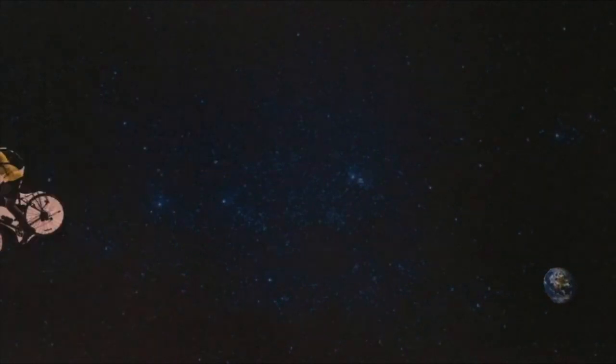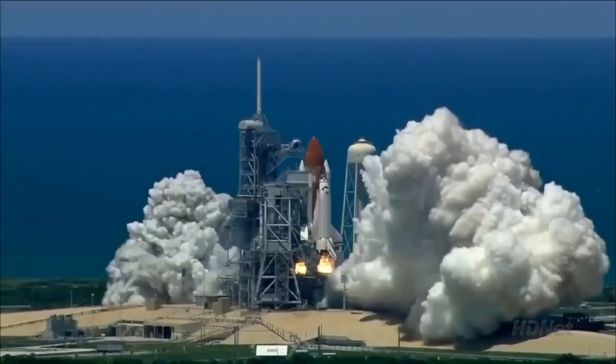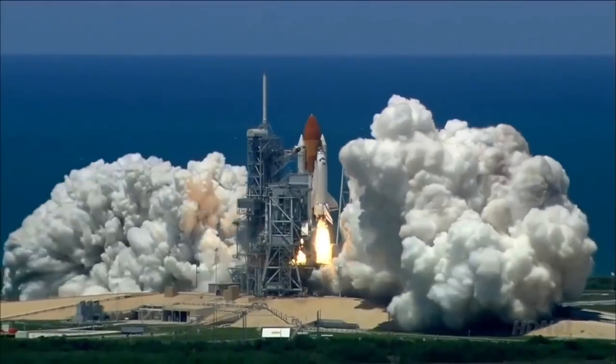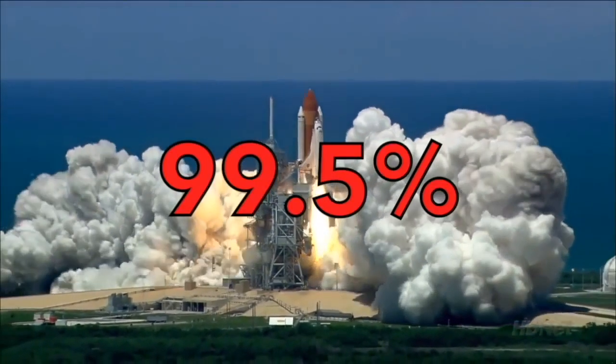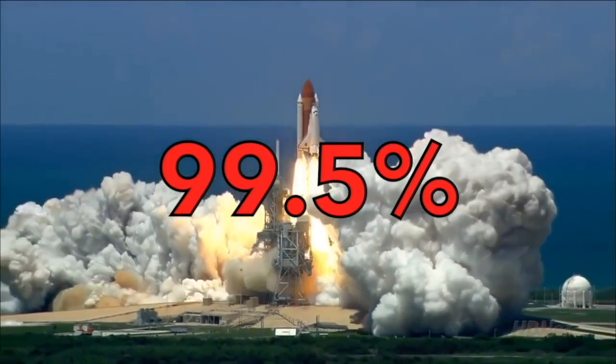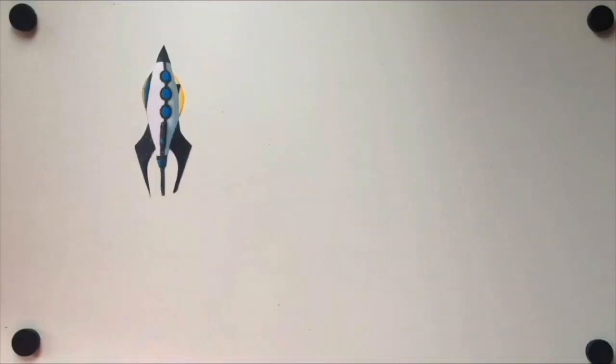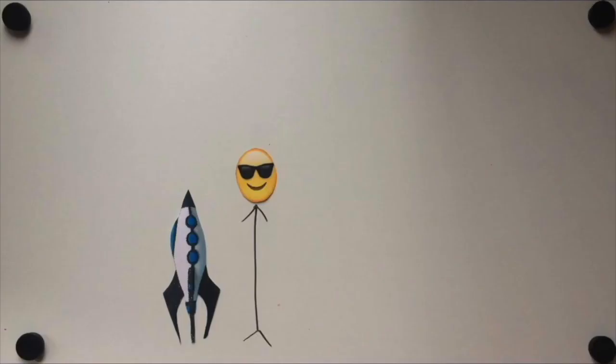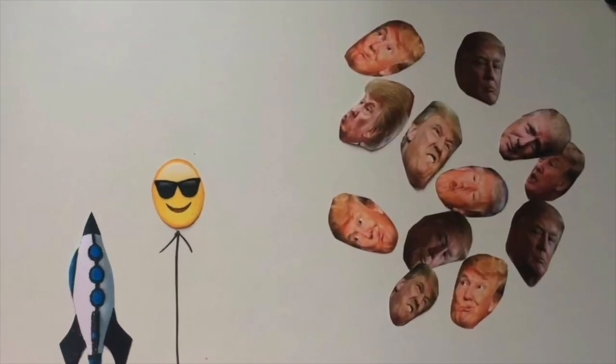When you move through space at a speed that is close to the speed of light, time goes slower for you than for the people you left behind. Say you're 15 when you left earth, in a spaceship that travels at 99.5% of the speed of light. When you'll come back at the age of 20, for example, you would find that all your friends are 65 years old.